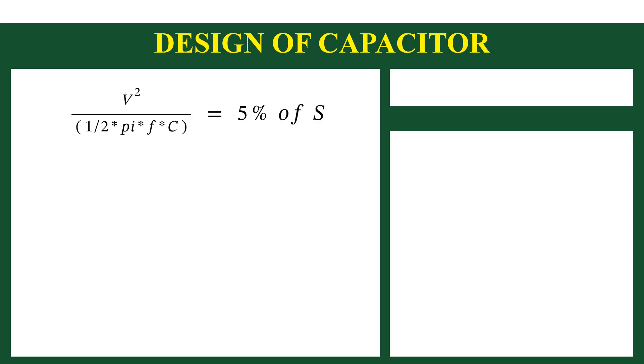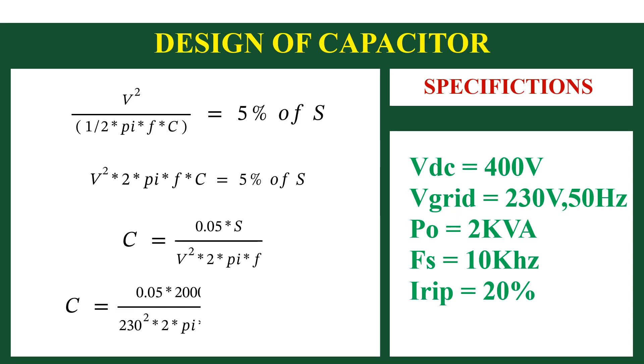This can be rewritten as V square into 2 pi fc is equal to 5% of S. Therefore, C is equal to 0.05 into S divided by V square into 2 pi f. Now substitute the values from the given specification. We will get value of capacitance as 6.01 micro farad.